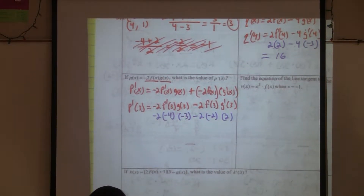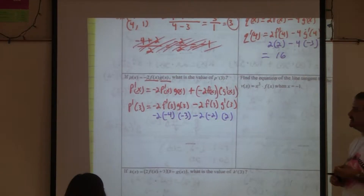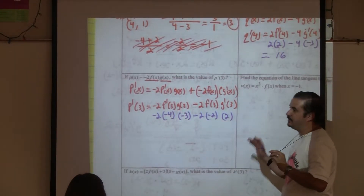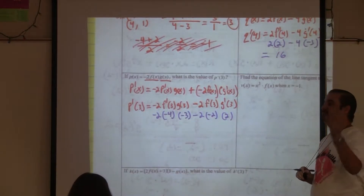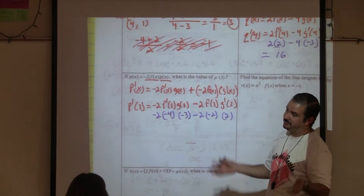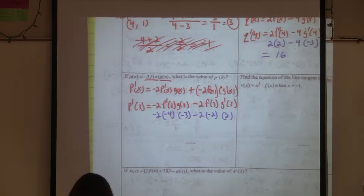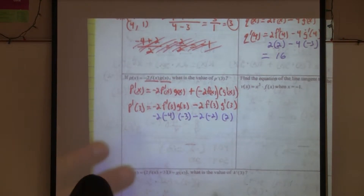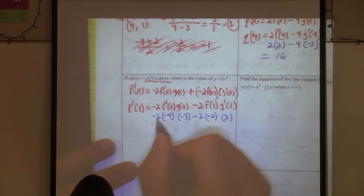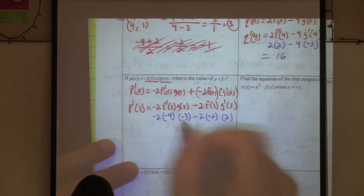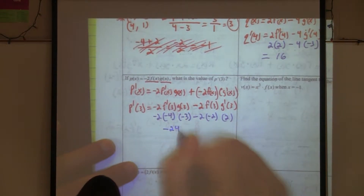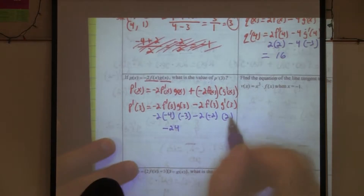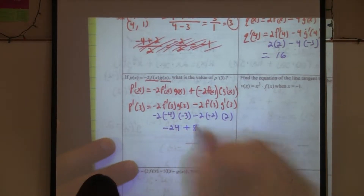There are going to be problems exactly like this on the AB test. They don't give you any functions — just a table of information and you have to use it. There will also be problems where they give you a graph and you have to use those graphs. Working it out: positive eight times negative three is negative 24. Positive four times two is positive eight.